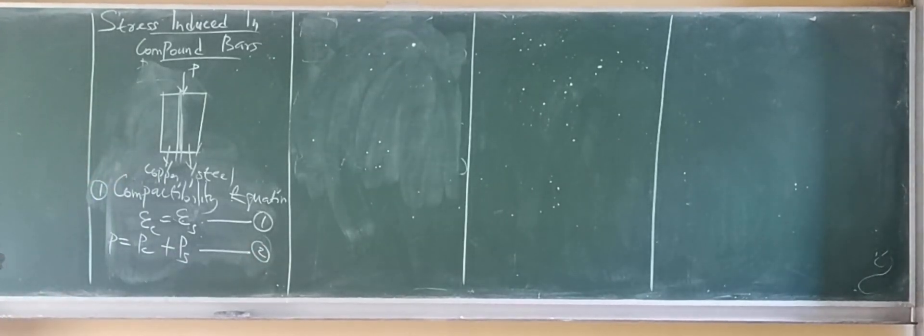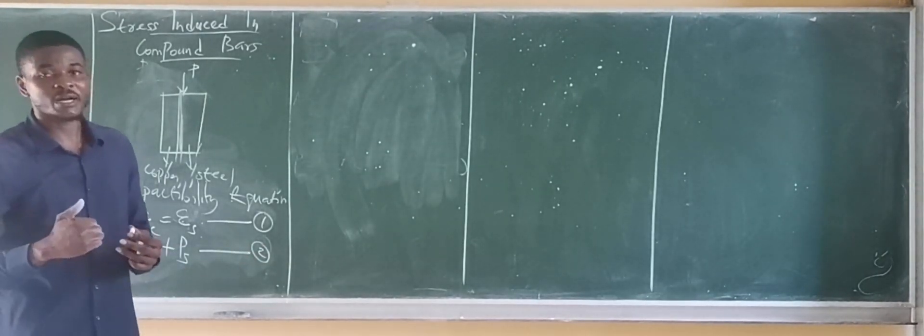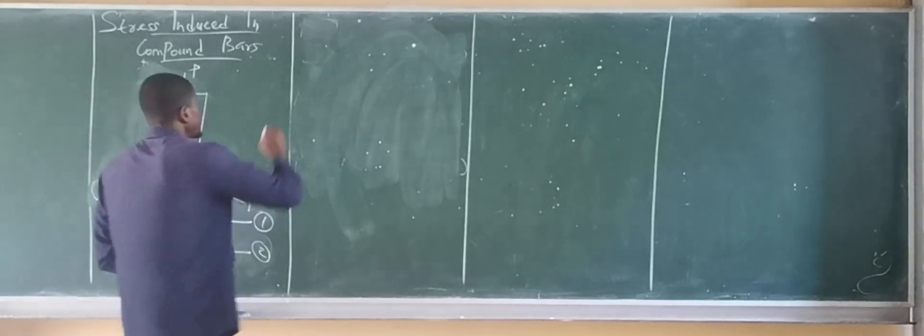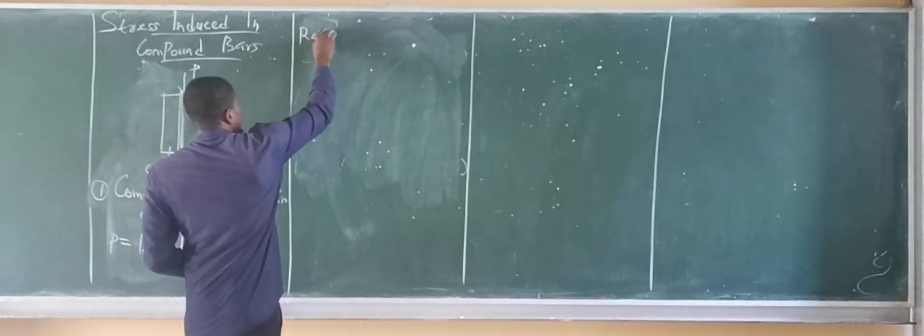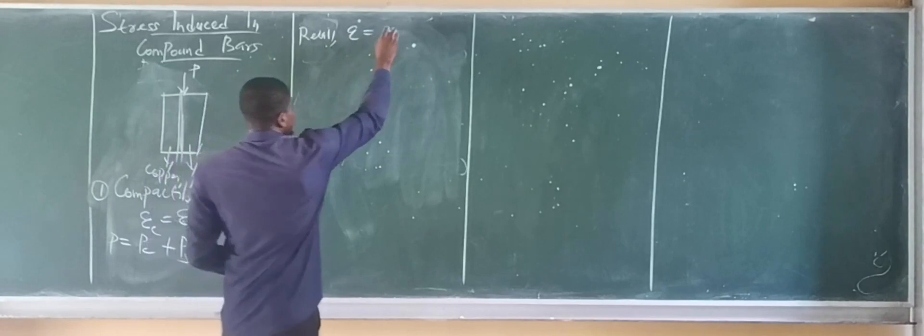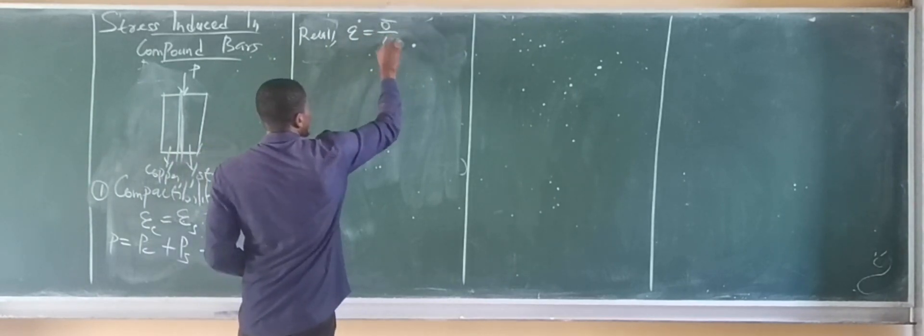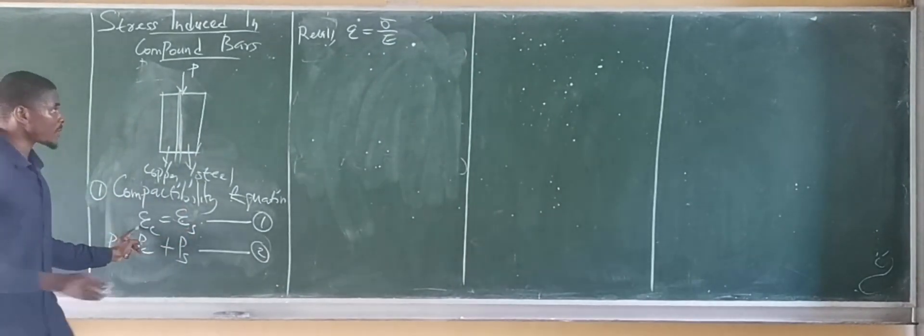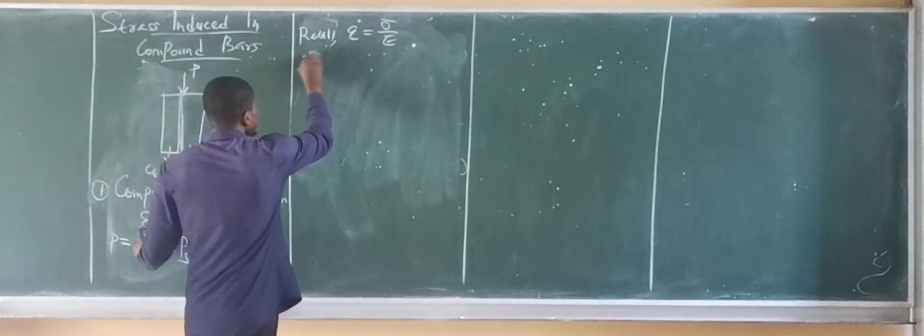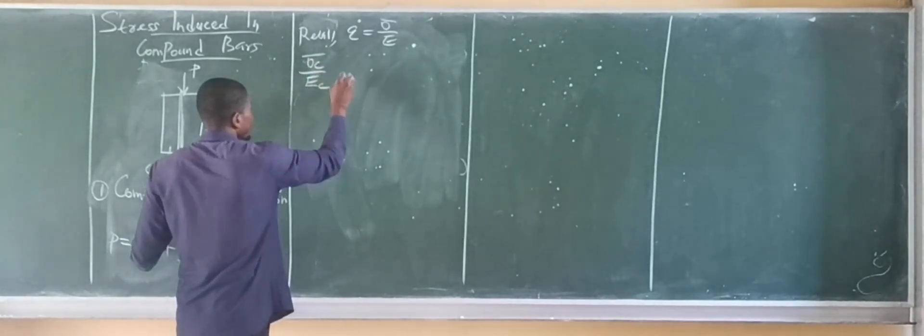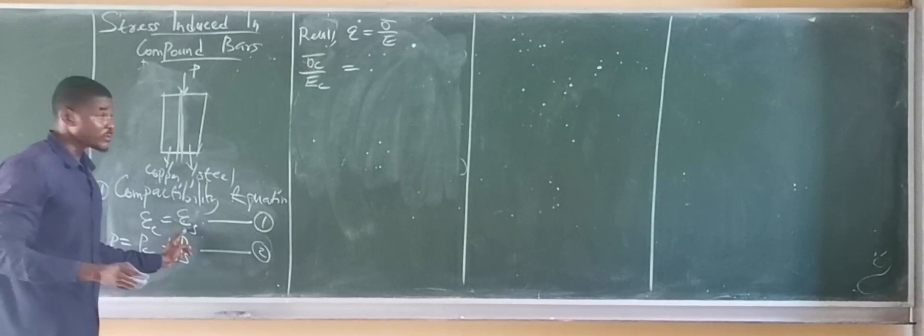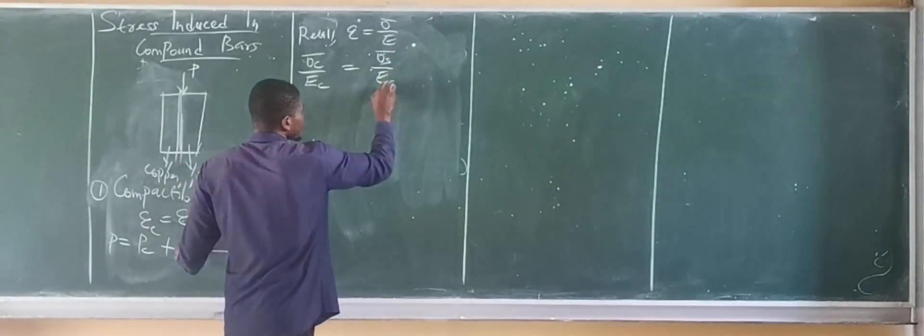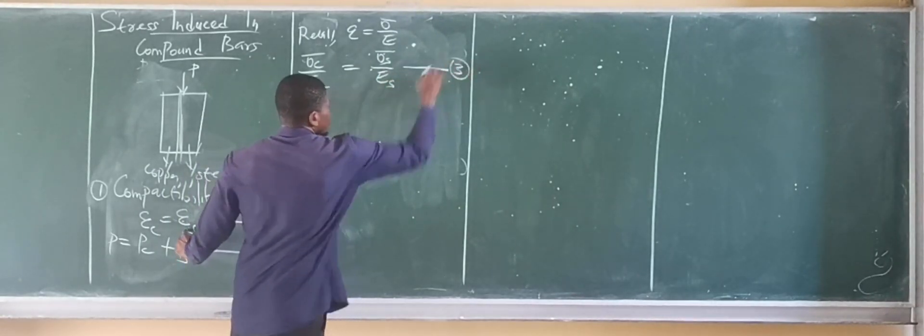The very important part around this equation is where we can actually find out the stress induced in a compound bar. Now, the first thing we do is recall that strain itself is actually stress over Young's modulus. So it means now that I can rewrite this equation: in place of strain of copper, I will have stress of copper over Young's modulus of copper to be equal to the strain of steel, I will have stress of steel over Young's modulus of steel. So this can be called equation 3.